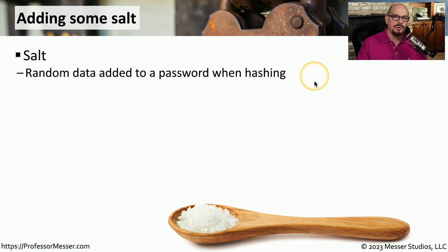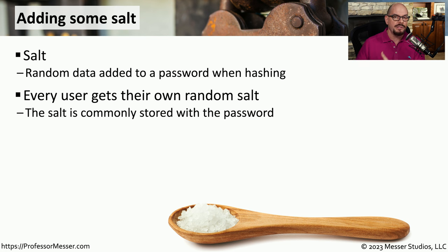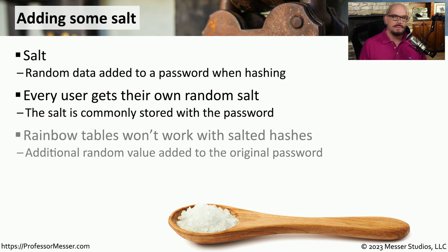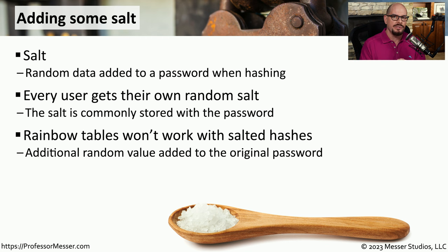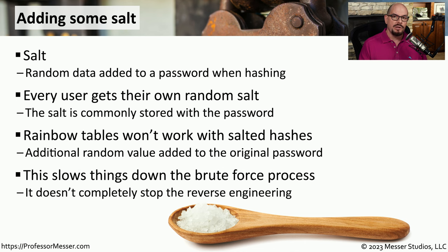A salt is random information that we add during the hashing process to modify or randomize the resulting hash. Every user gets a different random salt to go along with their password, which means if everyone is using the same password, we'll still see very different hashes stored for every single user. There's a technique for reverse engineering hashes called a rainbow table — a pre-compiled set of every possible input and the series of hashes associated with those inputs. This makes it very easy to take a non-salted hash and quickly determine the original password. But if you're adding a random salt to everyone's password, these rainbow tables will no longer work, which slows down an attacker significantly. A rainbow table can find this information in seconds, but brute forcing can take days, weeks, or even longer.